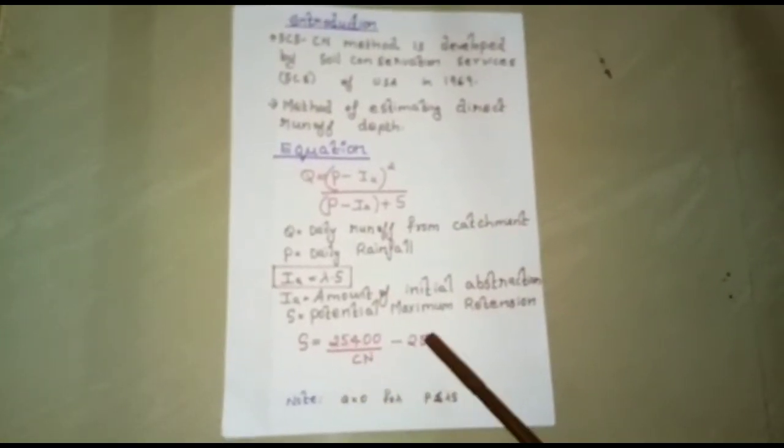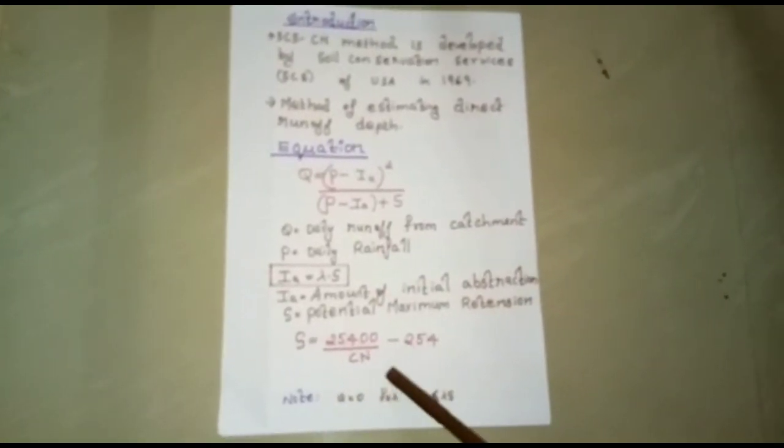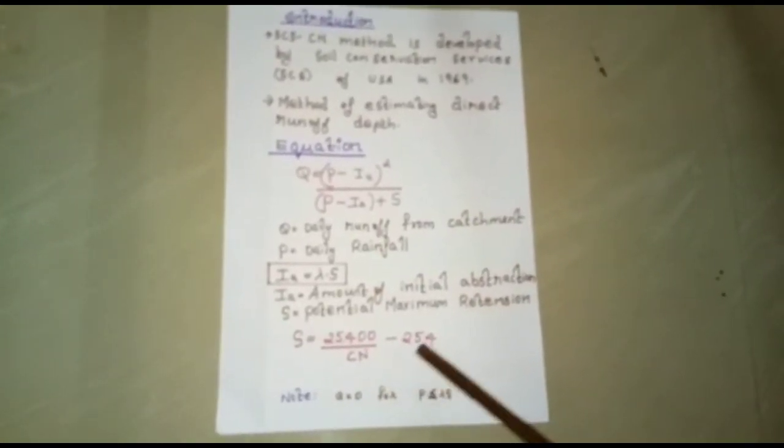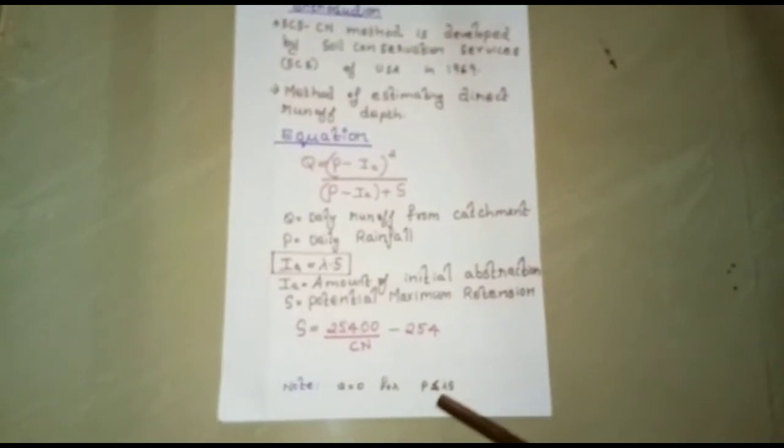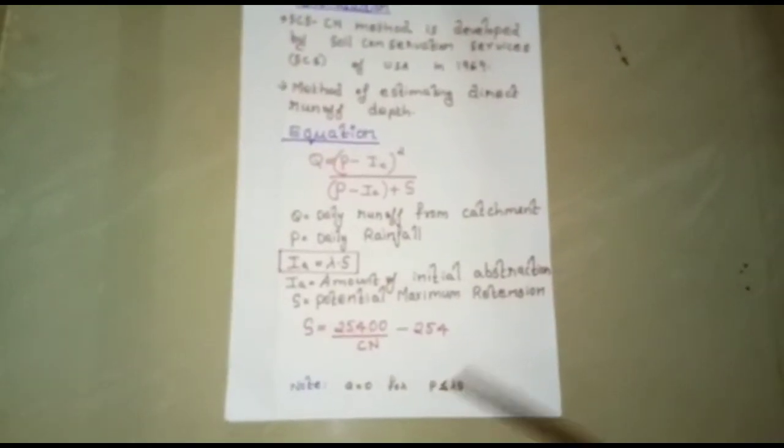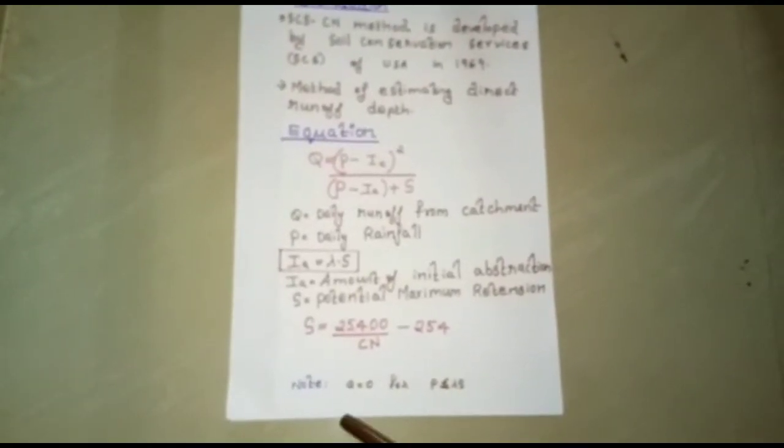IA is the amount of initial abstraction and S is the potential maximum retention. S is given by the equation: S equals 25400 divided by CN minus 254. For P less than or equal to lambda S, the runoff is zero.